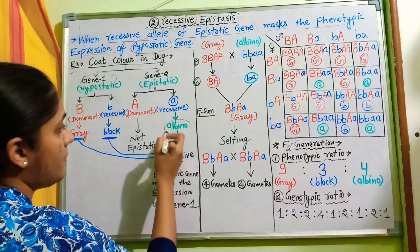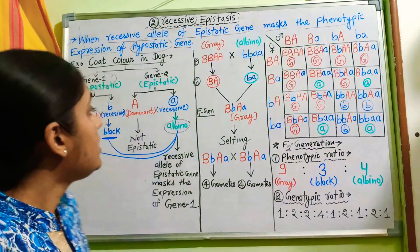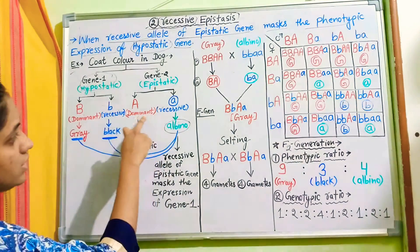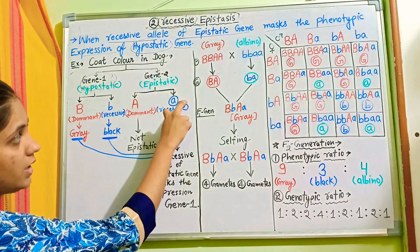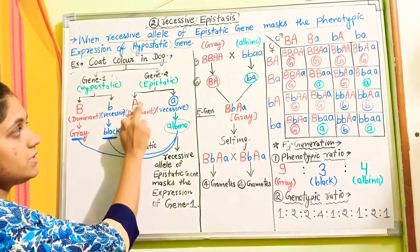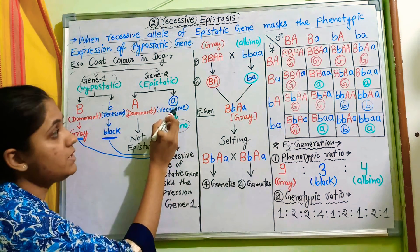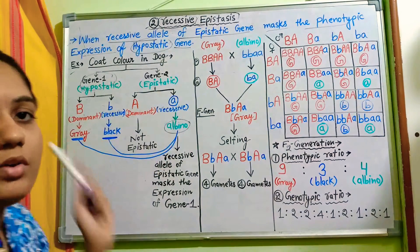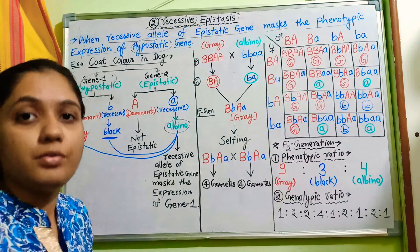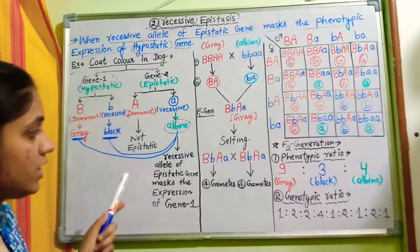The recessive allele small a of the epistatic gene suppresses the complete gene one — meaning both the dominant and recessive alleles of the hypostatic gene are suppressed. However, there is a limitation: since capital A is dominant over small a, in any genotype where capital A is present, small a cannot perform its epistatic suppression function, because small a is itself suppressed by the dominant allele of the same epistatic gene.